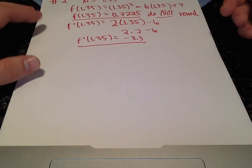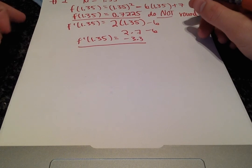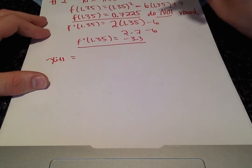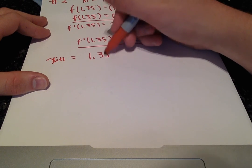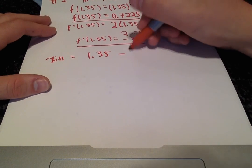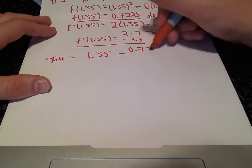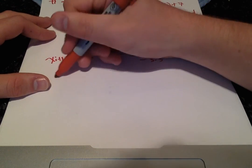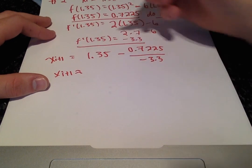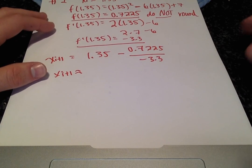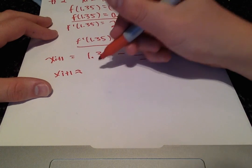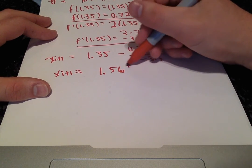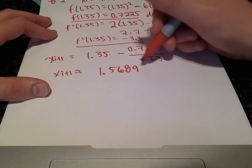So now we'll plug these values into our formula to get x sub i plus 1 equals 1.35 minus 0.7225 over negative 3.3. And we shall get 1.568939.